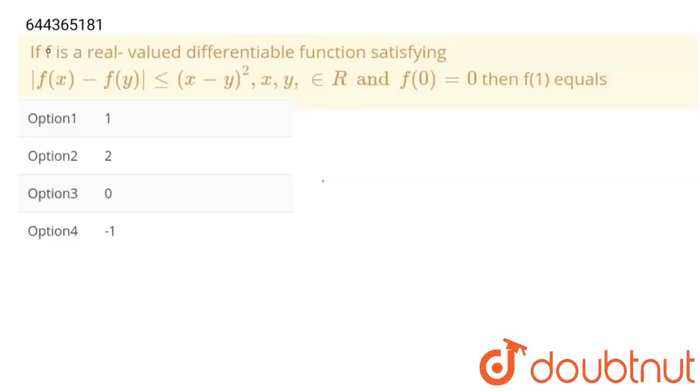Hello students, question is: f is a real valued differentiable function satisfying this equation and f(0) equals 0, then f(1) equals. And these are our four options. We have to say which of the following options is correct.